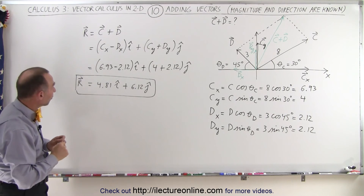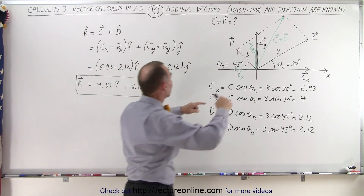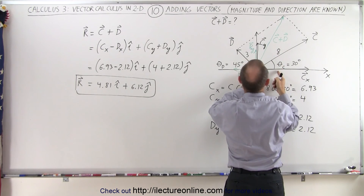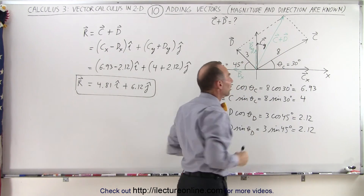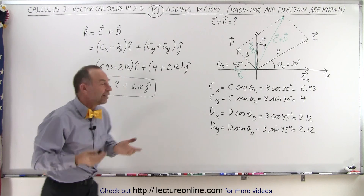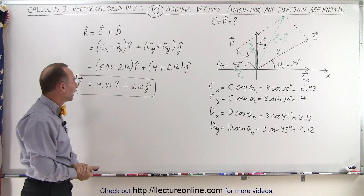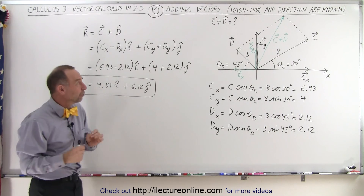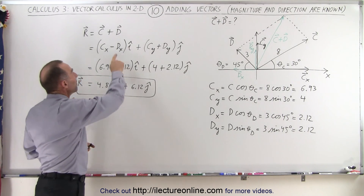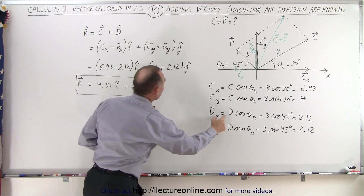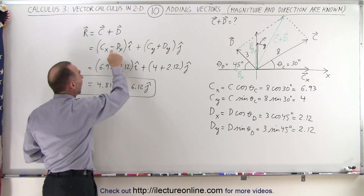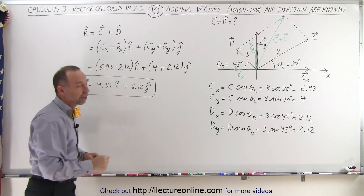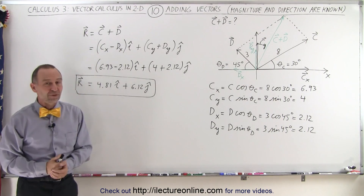When you take a look at that, you can see it looks about right — we have 6.12 in the y direction and about 4.81 in the x direction, so our graphical representation is not far off from what you would expect. Again, special attention: the magnitude of D sub x is positive, but when we write it in vector notation, we make it negative because it points in the negative direction. And that's how it's done.